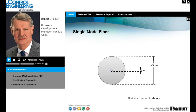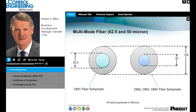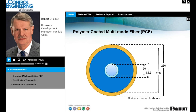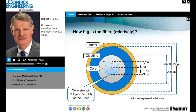Single mode fiber has a core of only 9 microns within a 125-micron cladding. The OM1 multi-mode fiber incorporates a 62.5 micrometer core, whereas OM2 through OM4 use a 50 micrometer core. There's also polymer-coated fiber (PCF), where the outside dimension is significantly larger, allowing a much easier installation. So it's very useful in areas requiring field installation right down at the control panel and machine level.